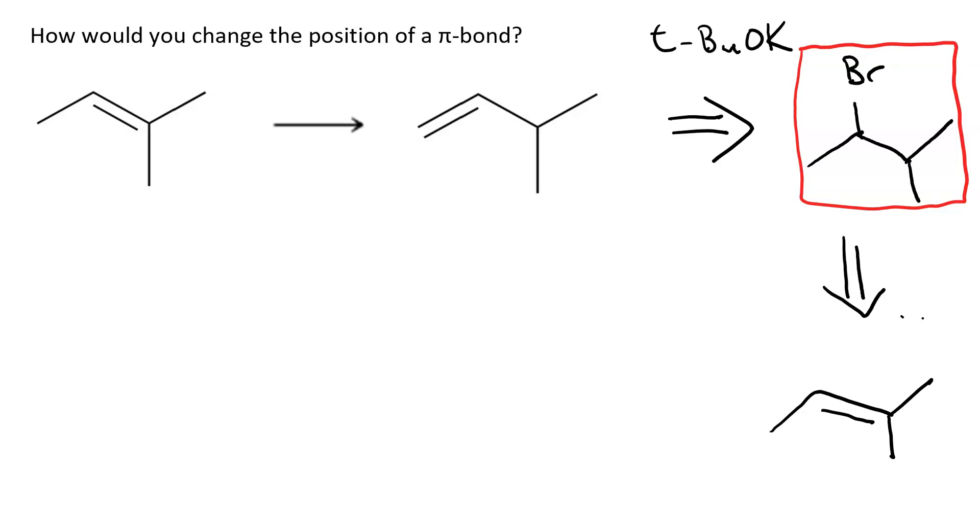We can make the 2-bromo-3-methylbutane simply by performing anti-Markovnikov hydrobromination of our initial compound.